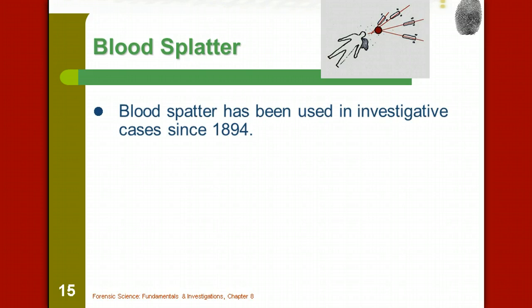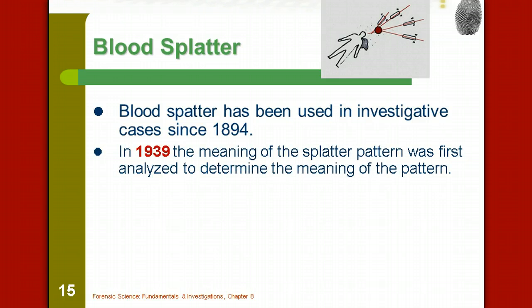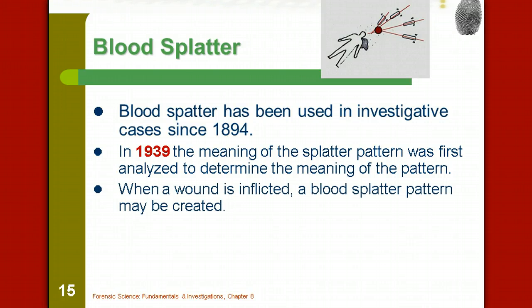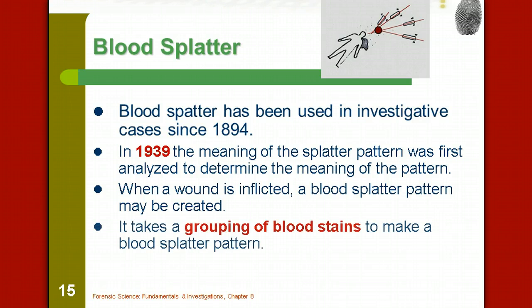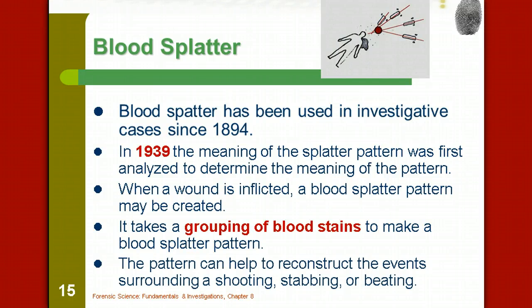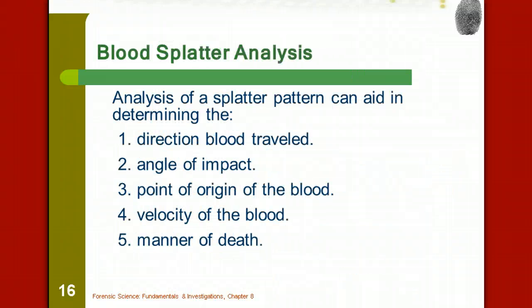Blood spatter itself has been used in investigative cases since 1894. In 1939, the meaning of the splatter pattern was first analyzed. When a wound is inflicted, a blood splatter pattern may be created. It takes a grouping of blood stains to make a splatter pattern - one droplet is not enough. The pattern itself can be used to reconstruct the events surrounding a shooting, stabbing, or beating.